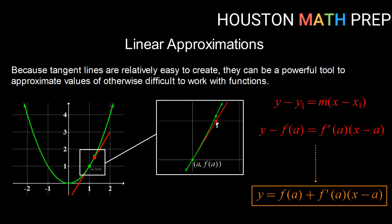As we move further away from a — further away from our point of tangency — that approximation is going to get further and further away from the true value. So we want to be aware of that, but as long as we can stay close to our point of tangency, we can get a pretty good approximation. Here's how we do that.